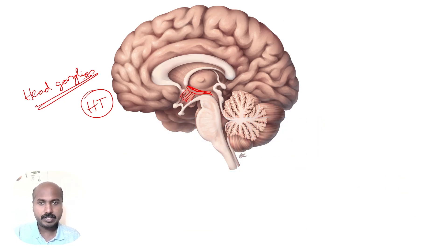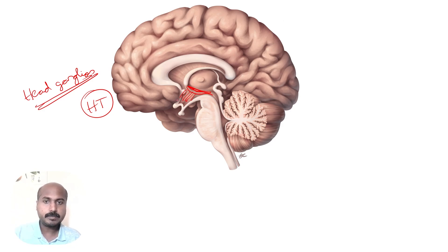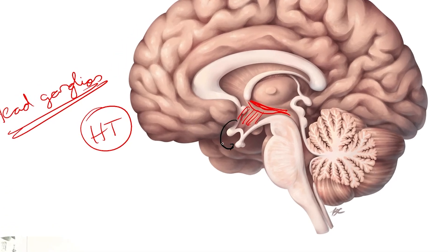On a stress stimulus towards the hypothalamus, the hypothalamus is going to secrete a hormone known as CRH — corticotrophin releasing hormone.